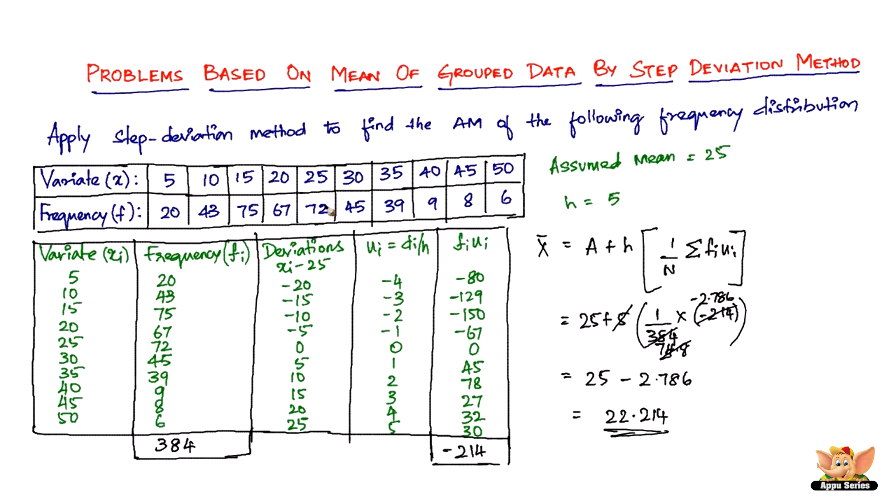Therefore, the mean of the given frequency distribution by the step deviation method is found to be 22.214. The only difference between this and the shortcut method is that we had a new term H and U_I, because when D_I was divided by H that was called U_I. This is to make the arithmetic easier for us. This ends this problem and video. I'll see you in the forthcoming videos with problems and concepts based on mode of grouped data.